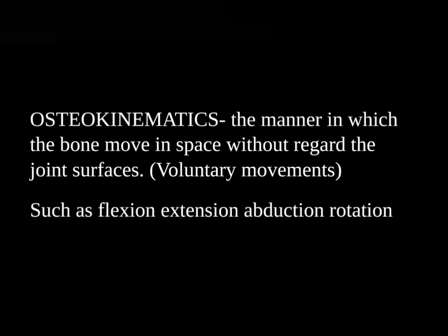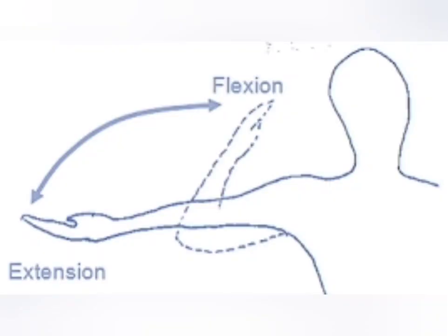Osteokinematics refers to the manner in which the bones move in space, without regard to the joint surface. Examples include flexion, extension, abduction, and rotation. When you have done a bone movement, that is known as osteokinematics — the motion of bones.